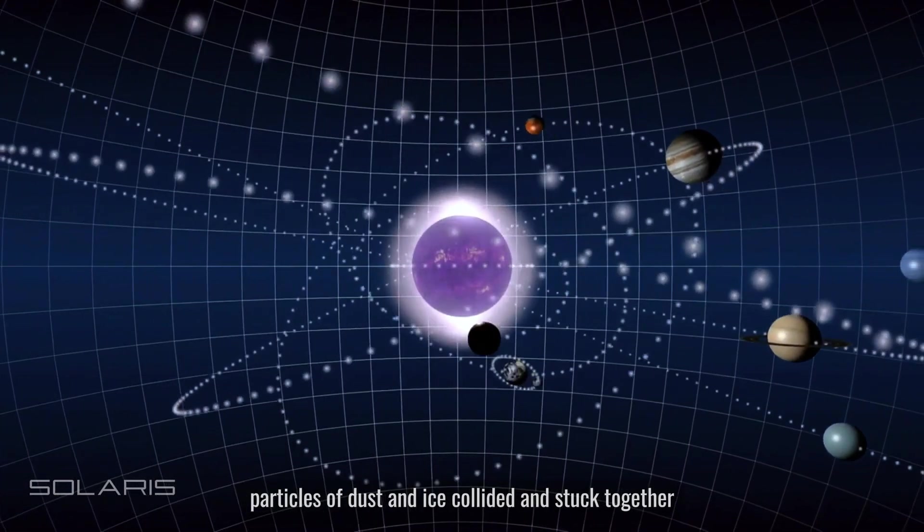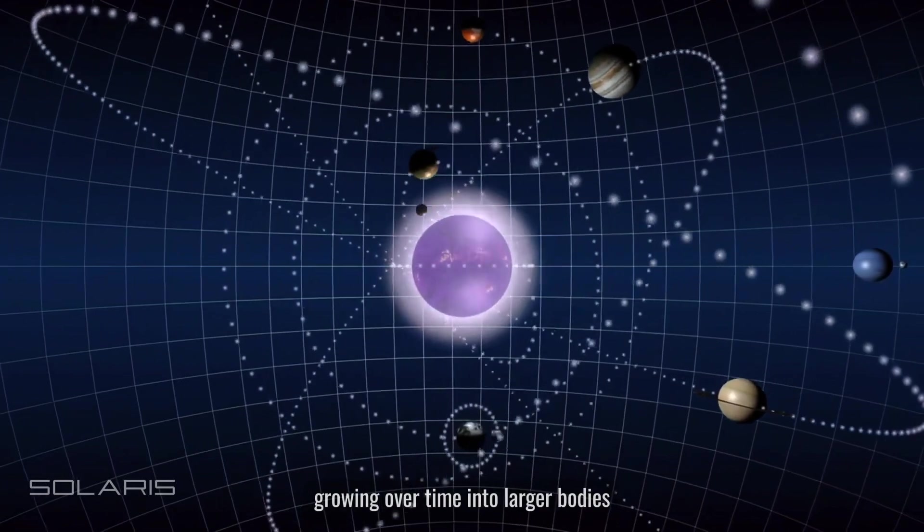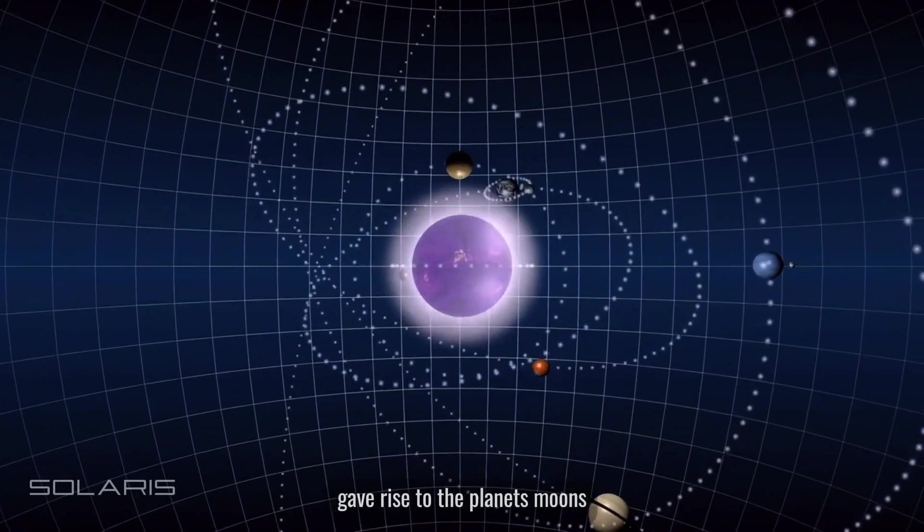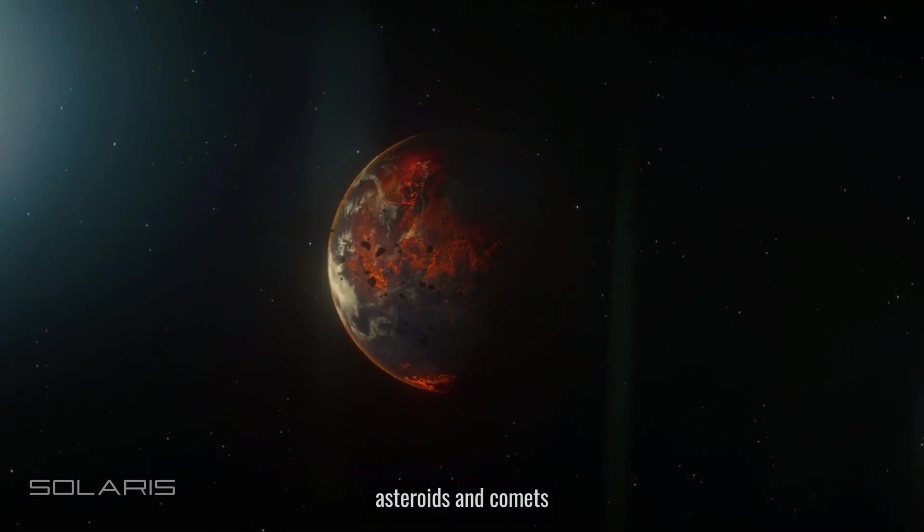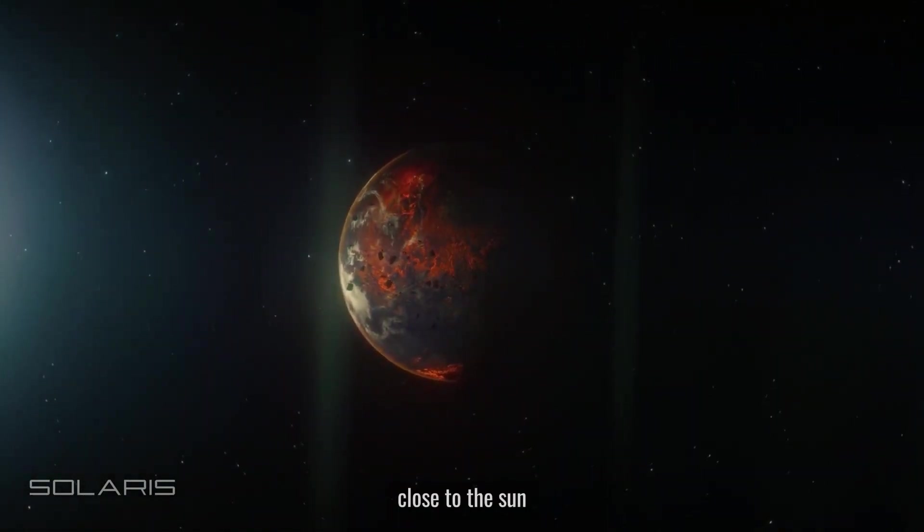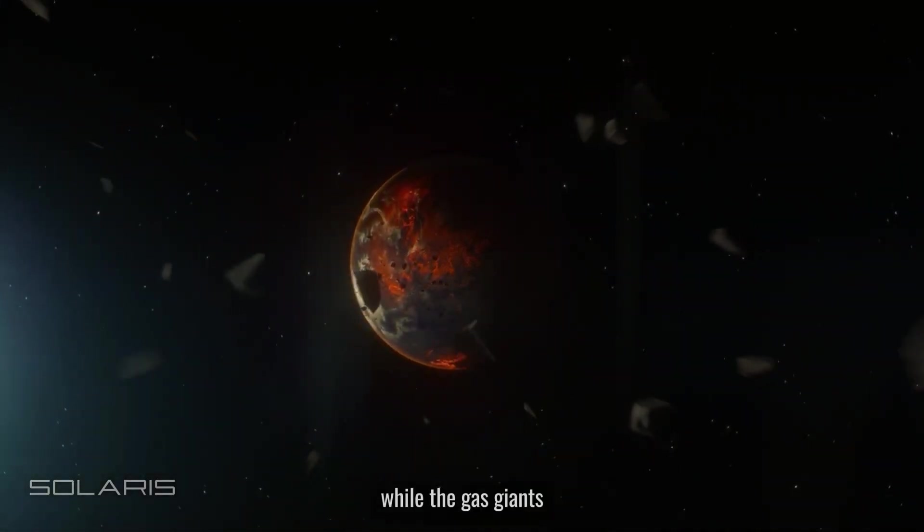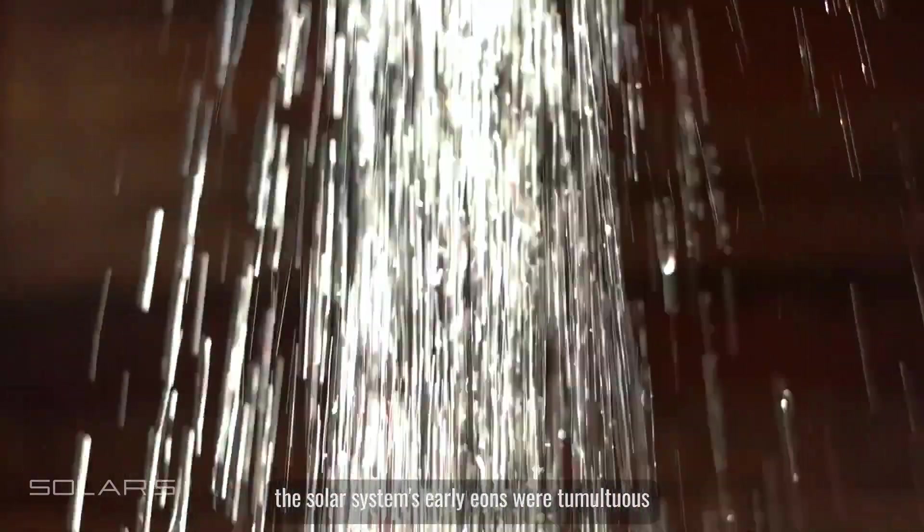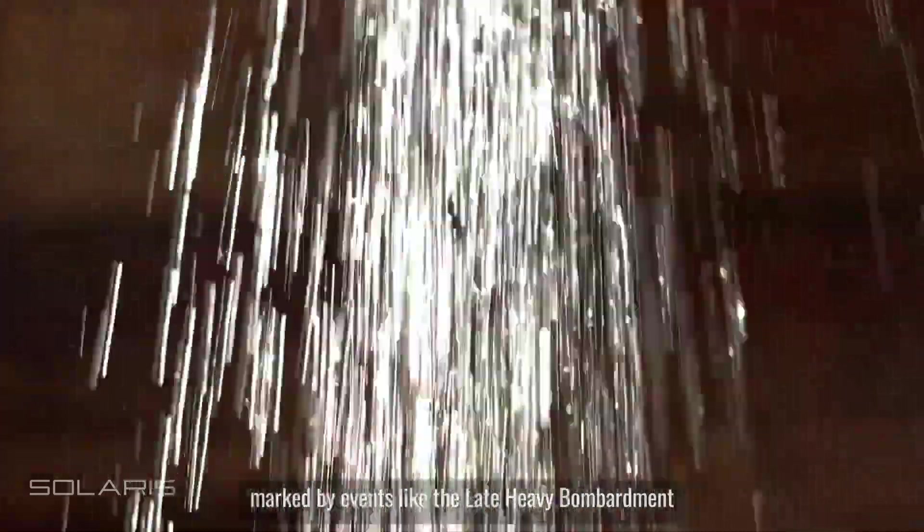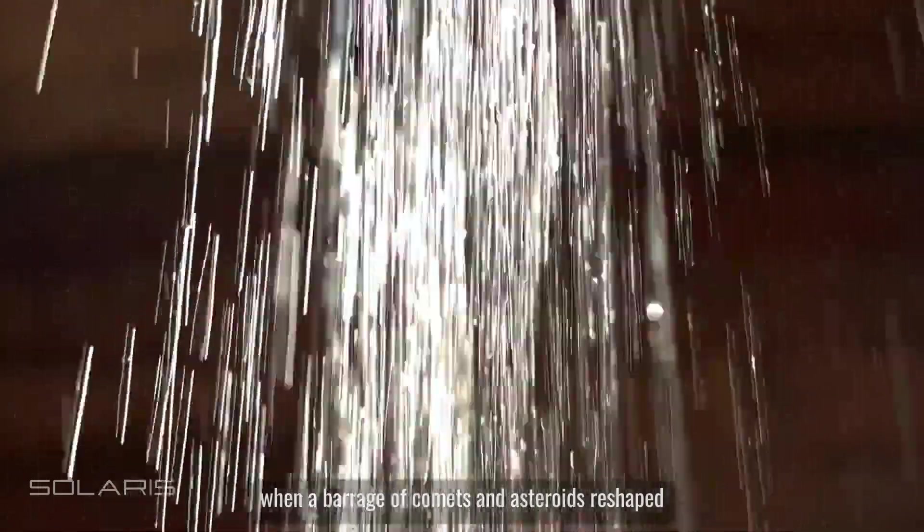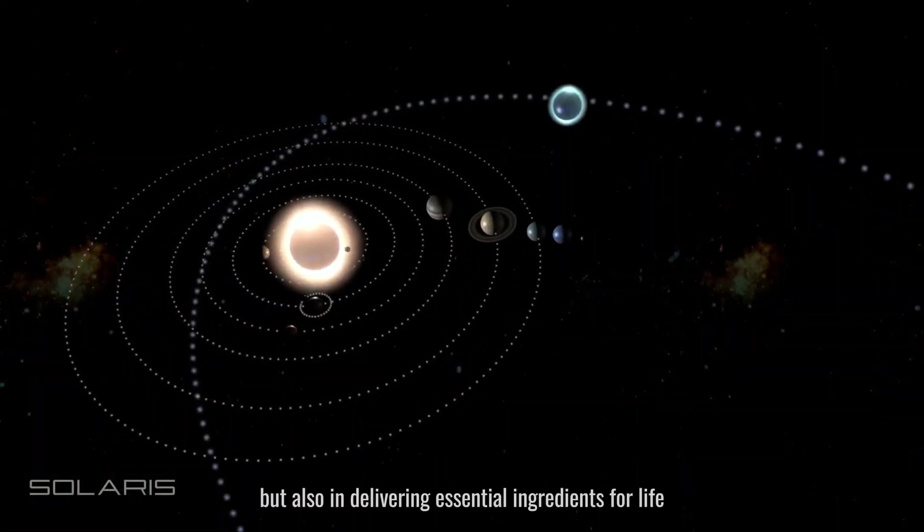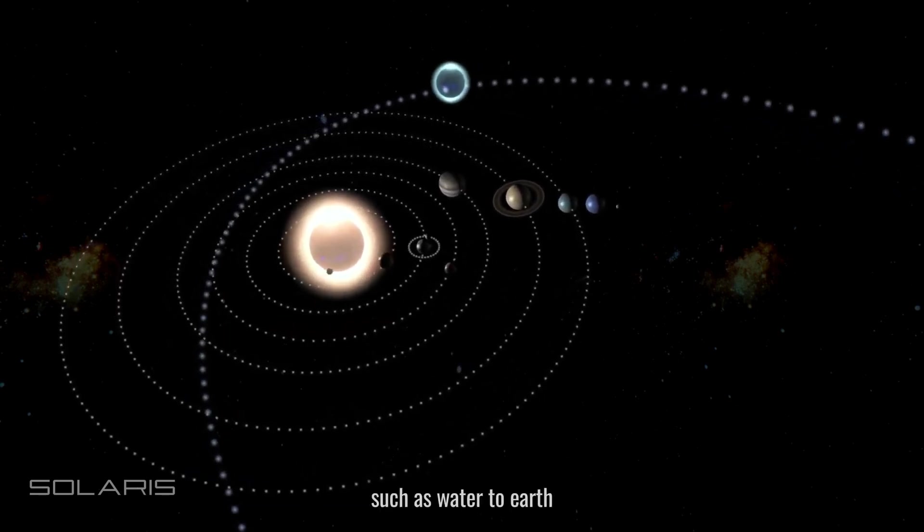Within the protoplanetary disk, particles of dust and ice collided and stuck together, growing over time into larger bodies. These planetesimals, through their relentless dance of accretion and collision, gave rise to the planets, moons, asteroids, and comets. The inner solar system, close to the sun, formed rocky planets like our own Earth, while the gas giants found their place in the colder reaches beyond. The solar system's early eons were tumultuous, marked by events like the late heavy bombardment, when a barrage of comets and asteroids reshaped the surfaces of the young planets, delivering essential ingredients for life, such as water, to Earth.